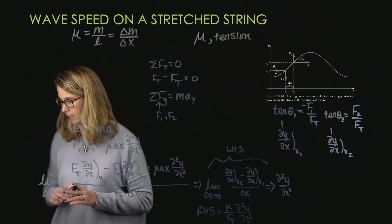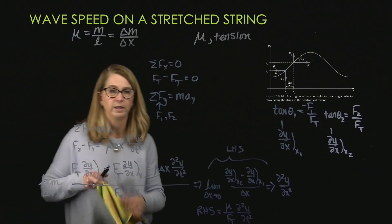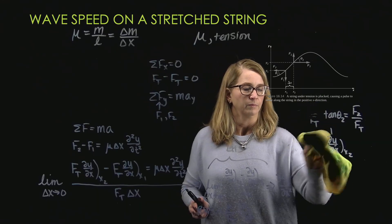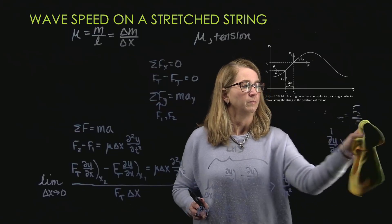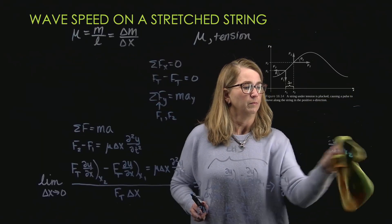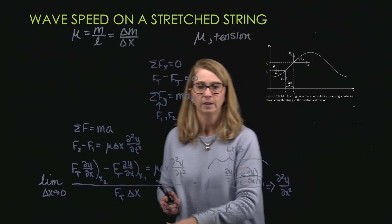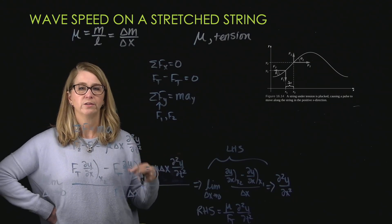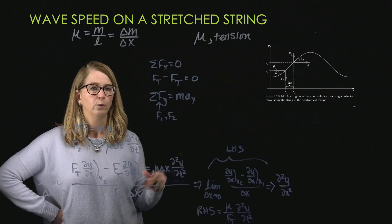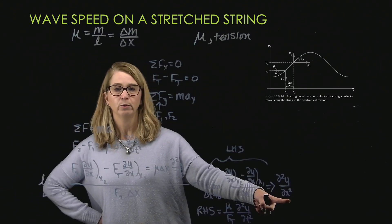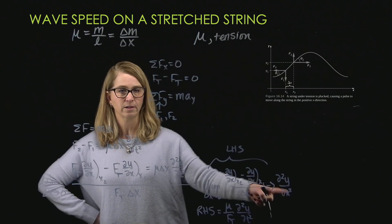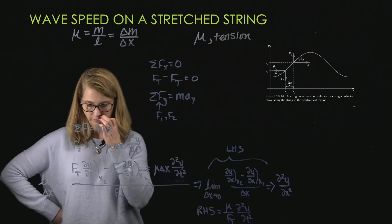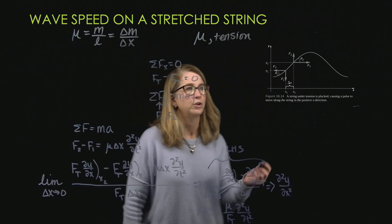We used F equals ma and did some manipulation. The left-hand side of our equation is simply the second derivative of y with respect to x, and the right-hand side is mu over Ft times the second derivative of y with respect to time. Putting it together, this matches the form of the wave equation, where the coefficient on the right-hand side represents 1 over the speed squared. So we can say V equals the square root of the tension divided by the mass per unit length.